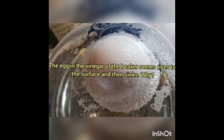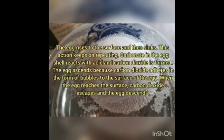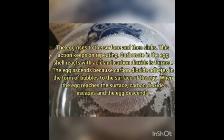The egg in the vinegar in the beaker seems to rise to the surface and then sinks. Why? The egg rises to the surface and then sinks, and this action keeps repeating. Carbonate in the egg shell reacts with acid and carbon dioxide is formed. The egg ascends because carbon dioxide adheres in the form of bubbles to the surface of the egg. When the egg reaches the surface, carbon dioxide escapes and the egg descends.